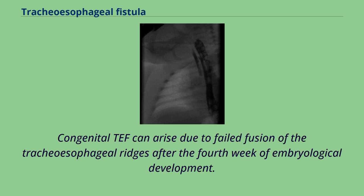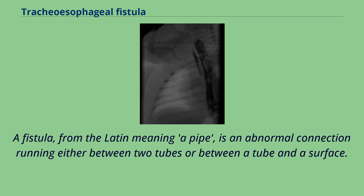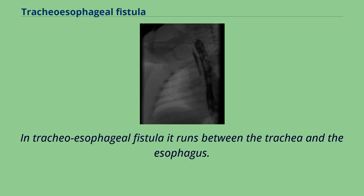Congenital TEF can arise due to failed fusion of the tracheoesophageal ridges after the fourth week of embryological development. A fistula — from the Latin meaning 'a pipe' — is an abnormal connection running either between two tubes or between a tube and a surface. In tracheoesophageal fistula, it runs between the trachea and the esophagus.